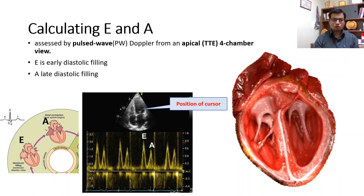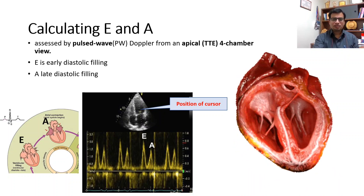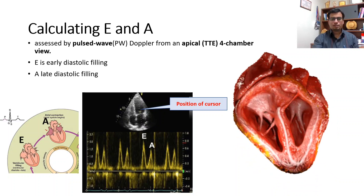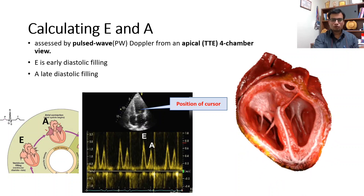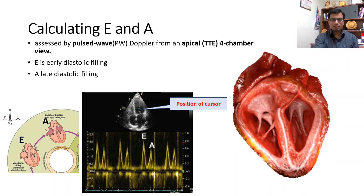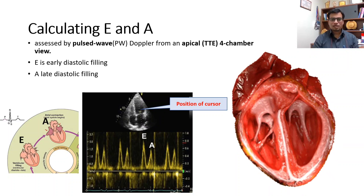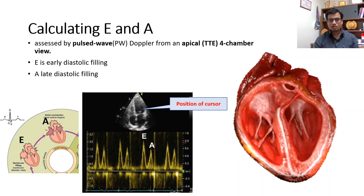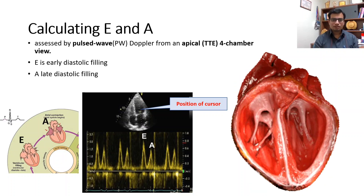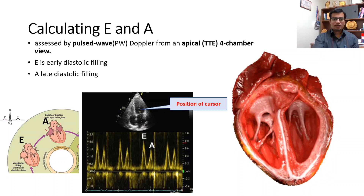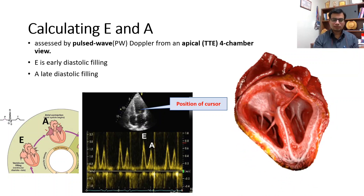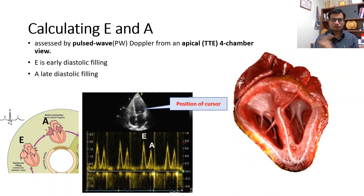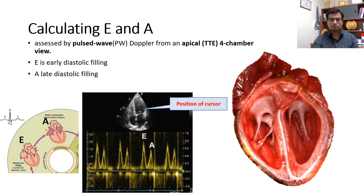Both E and A are blood flow velocities and are assessed by pulsed wave Doppler. The sample volume is placed in the LV cavity between the tips of the mitral valve leaflets. With transthoracic echocardiography, on the apical four-chamber view the flow into the LV is towards the transducer. The E and A waves are positive deflections and the normal E/A ratio is 1.3 or greater, meaning E is most of the time bigger than A.